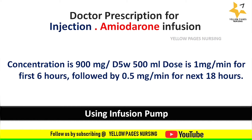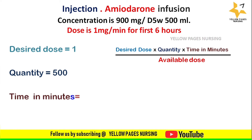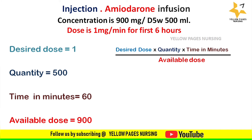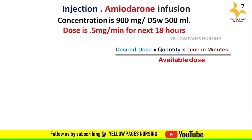For the dose of 1 mg per minute for the first 6 hours: desired dose = 1, quantity = 500, time in minutes = 60, available dose = 900. Applying the formula gives 33.3 ml per hour. Hence, the dose of 1 mg per minute is administered as 33.3 ml per hour for 6 hours.